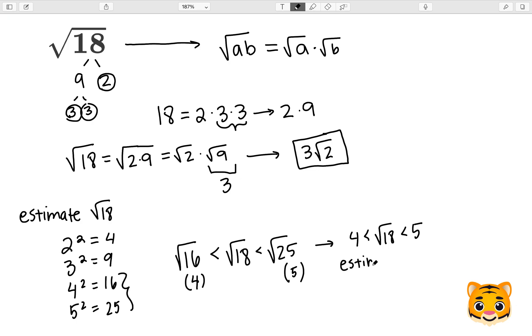If we wanted to estimate the square root of 18 to the nearest whole number, we would say it's around 4. And this is due to the fact that 18 is a lot closer to 16 than it is to 25.